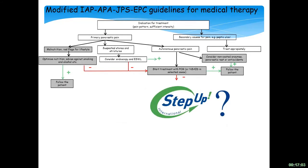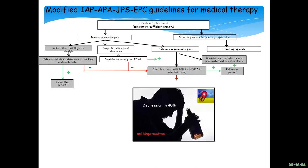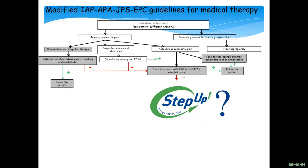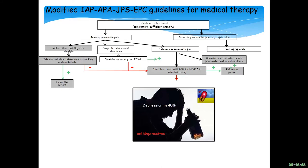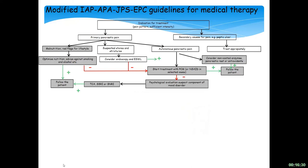Now we have used the simple approaches. Most people say we use the WHO ladder for pain treatment and step up. But what we do is consider whether the patients are really depressed, because depression is typically seen in up to 40% — I mean significant depression, not only anxiety measured on the HADS scale. If they have signs of depression and severe anxiety, we treat them with tricyclic antidepressants, SNRIs, or SSRIs, to have an effect both on the pain system and on the depression.